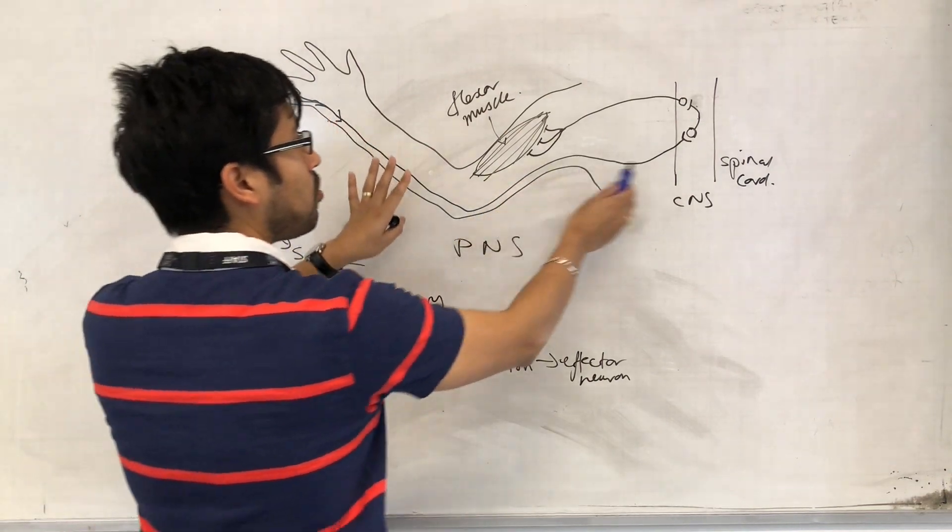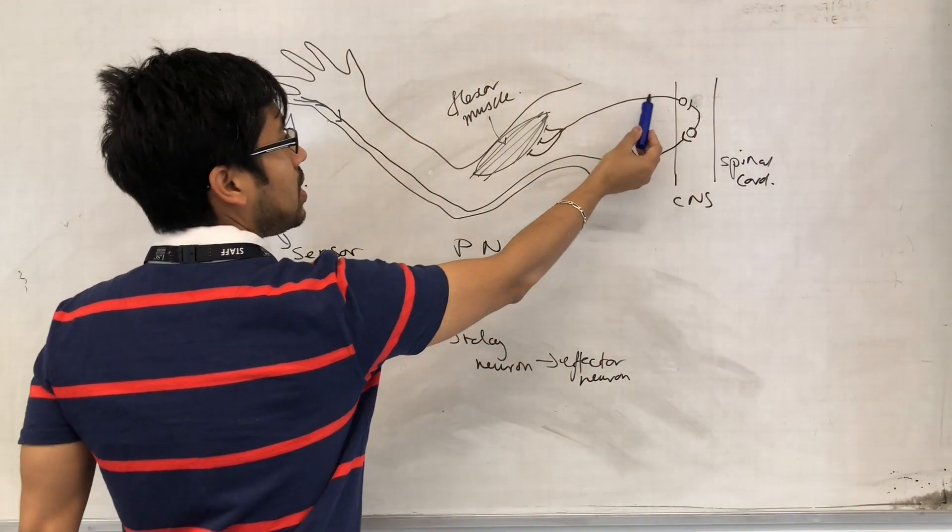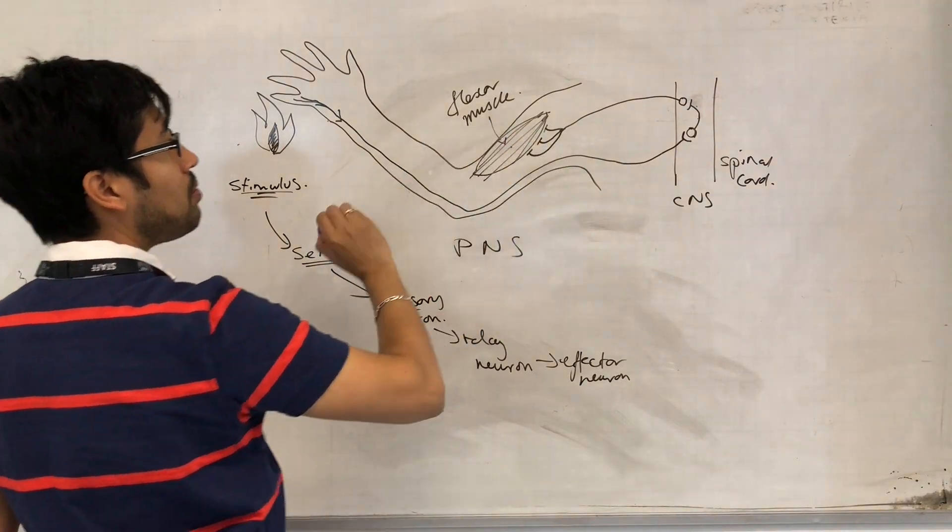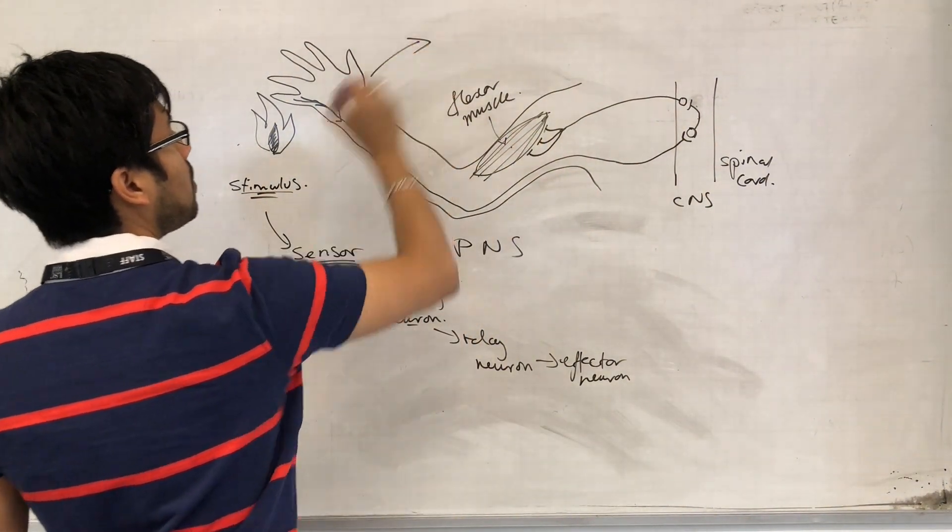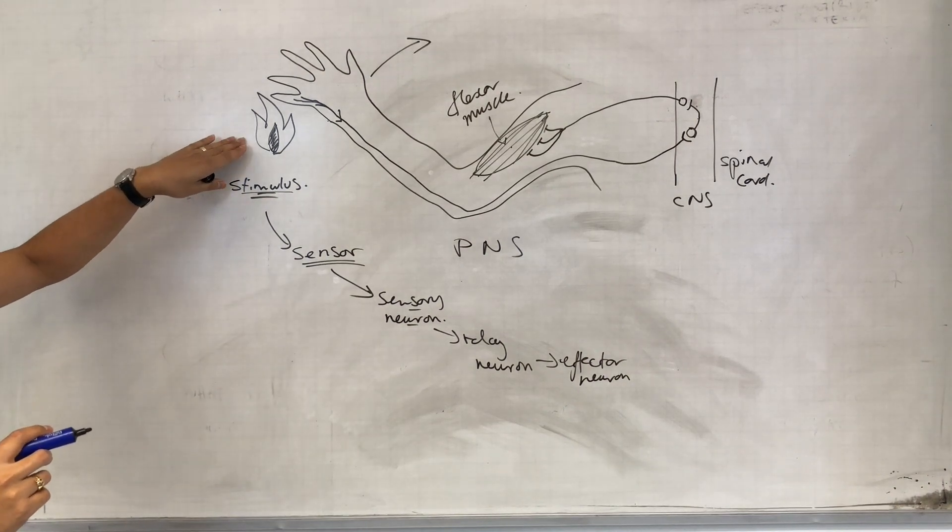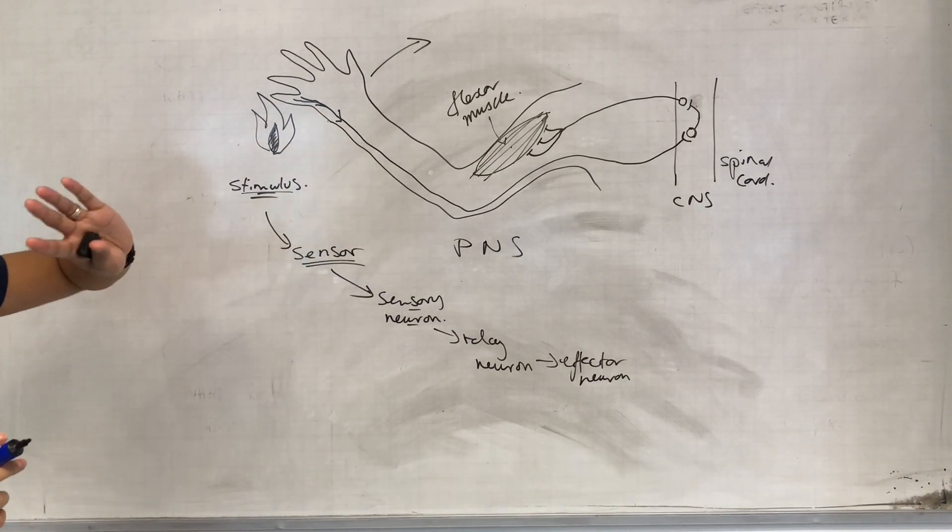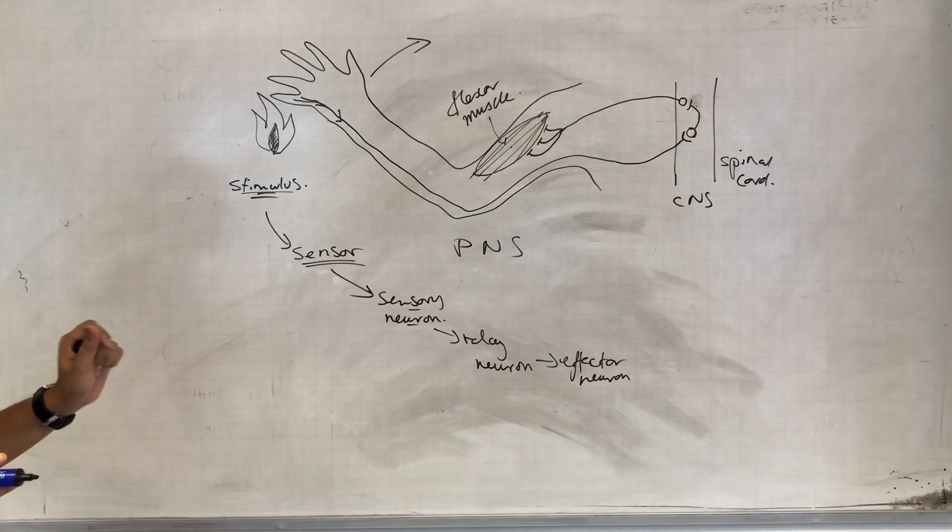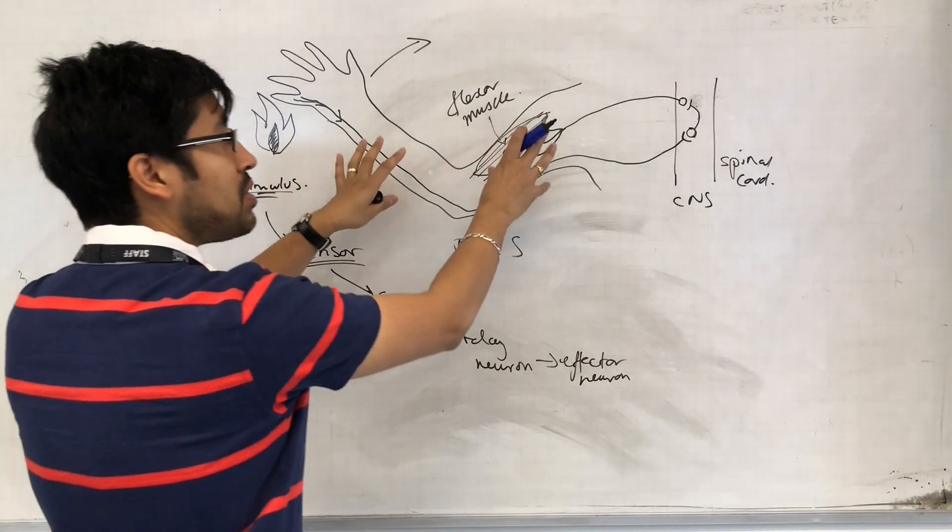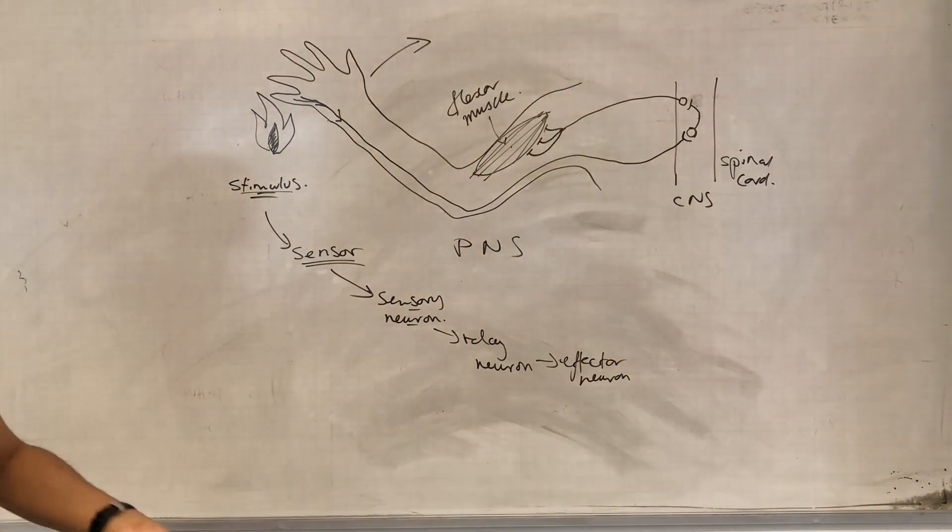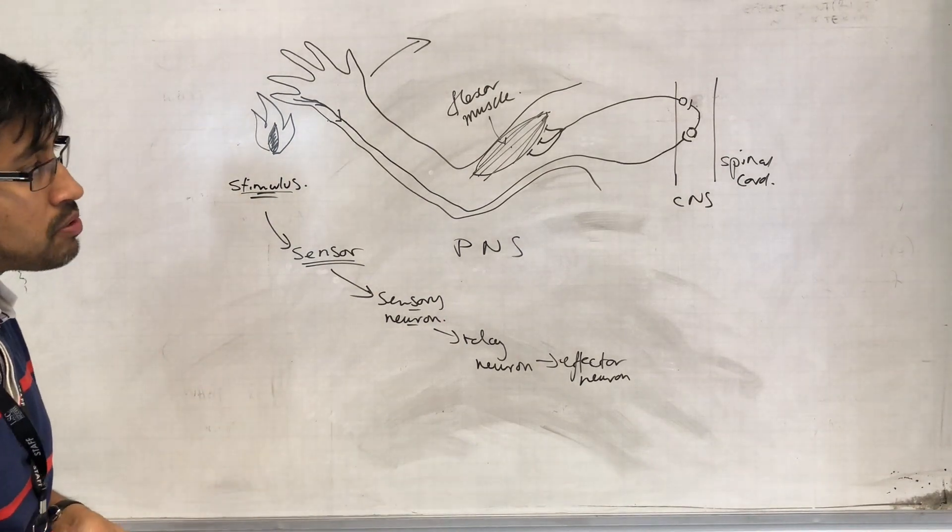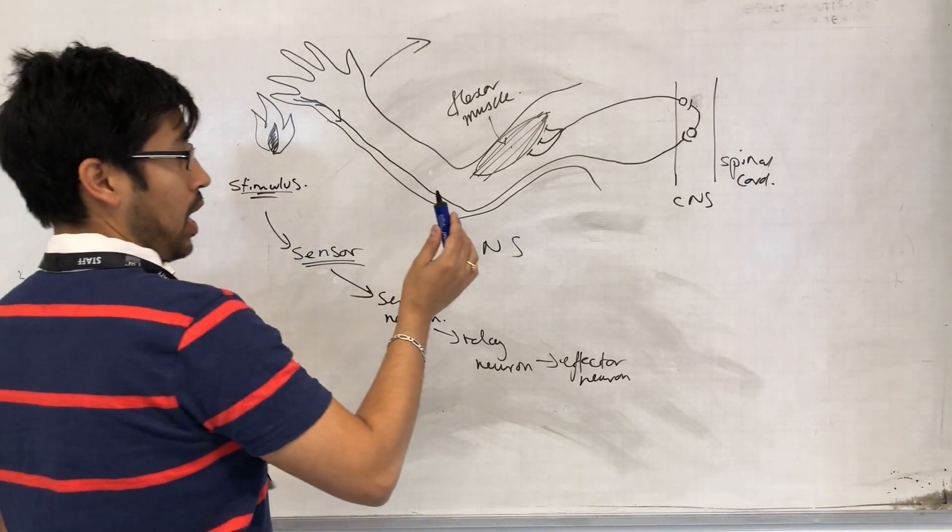So you see how this is all wired up. When the impulse passes down along the effector neuron, the effector muscle contracts, the arm moves away from the thing that could cause it damage. The organism survives, has a better chance of reproducing as a result, and maybe the alleles that resulted in this kind of system, then the frequency of those alleles increases in subsequent generations.